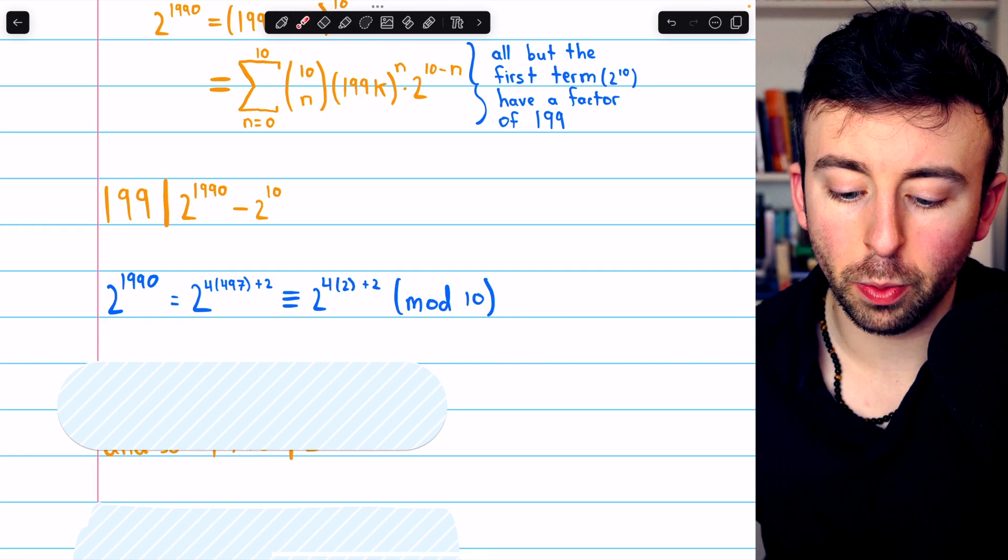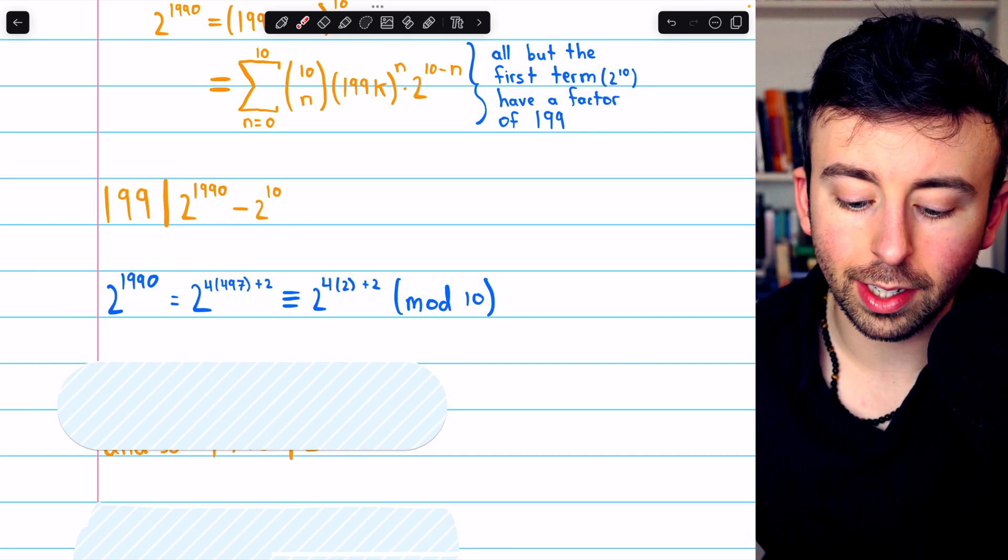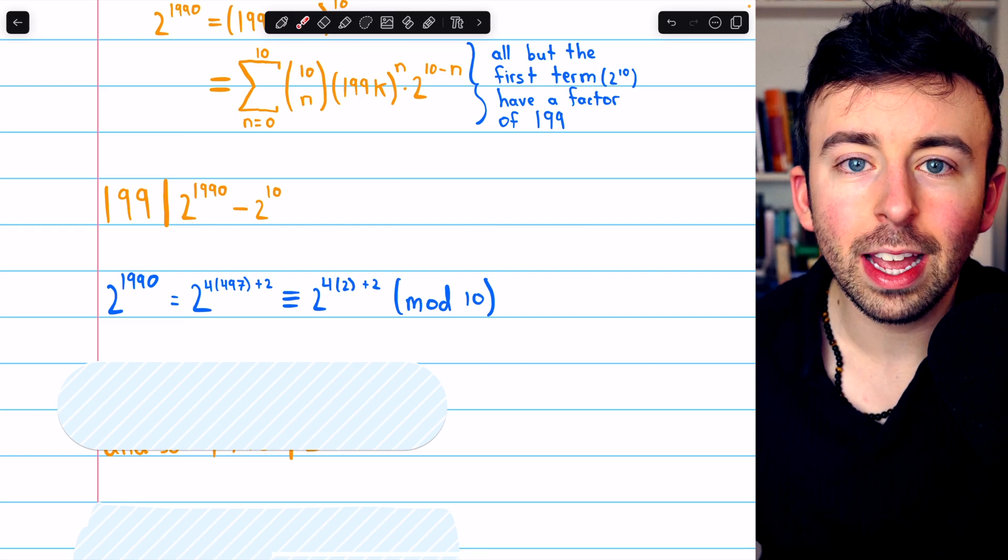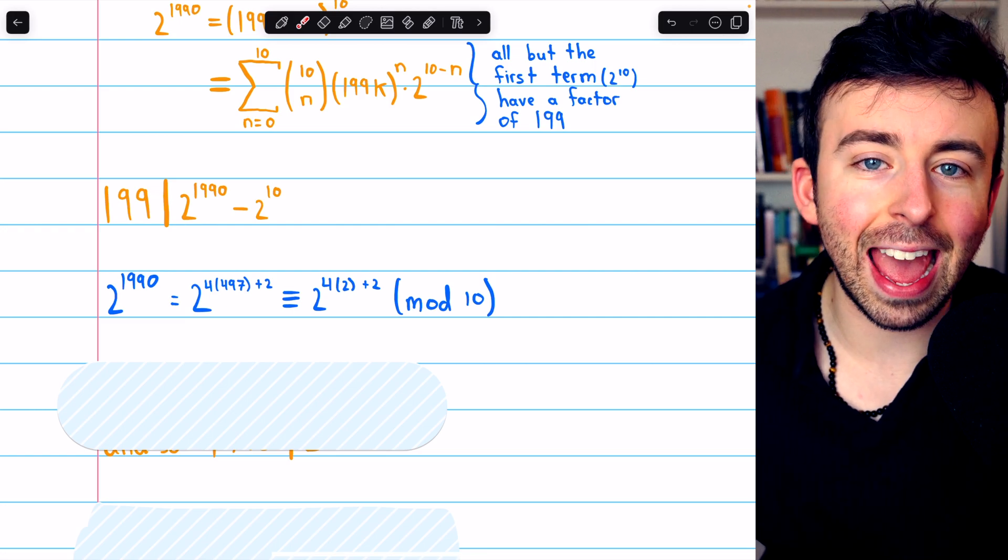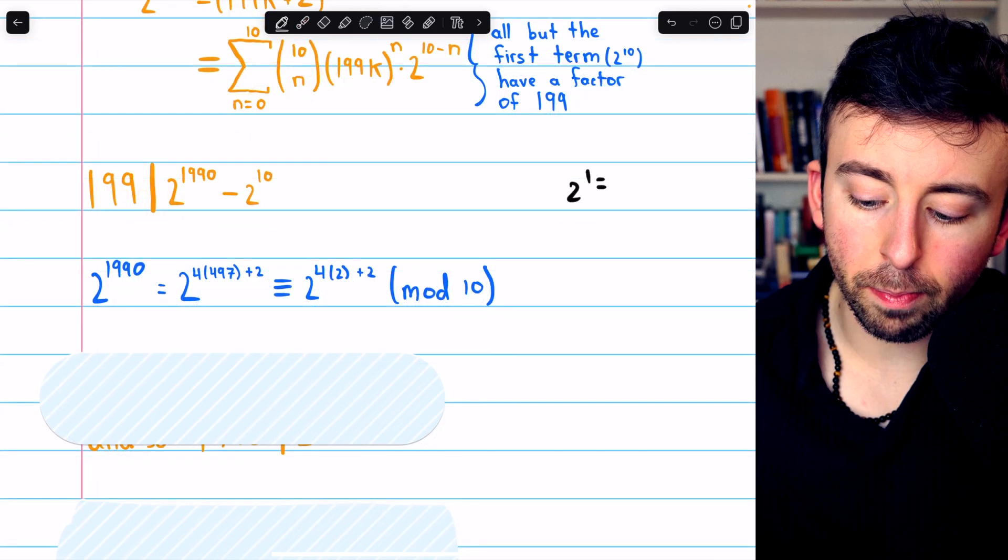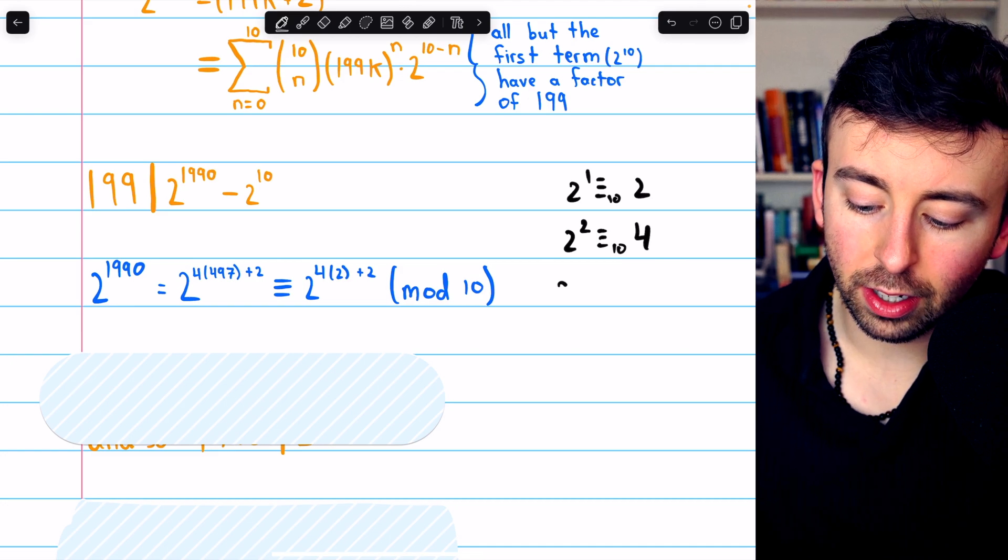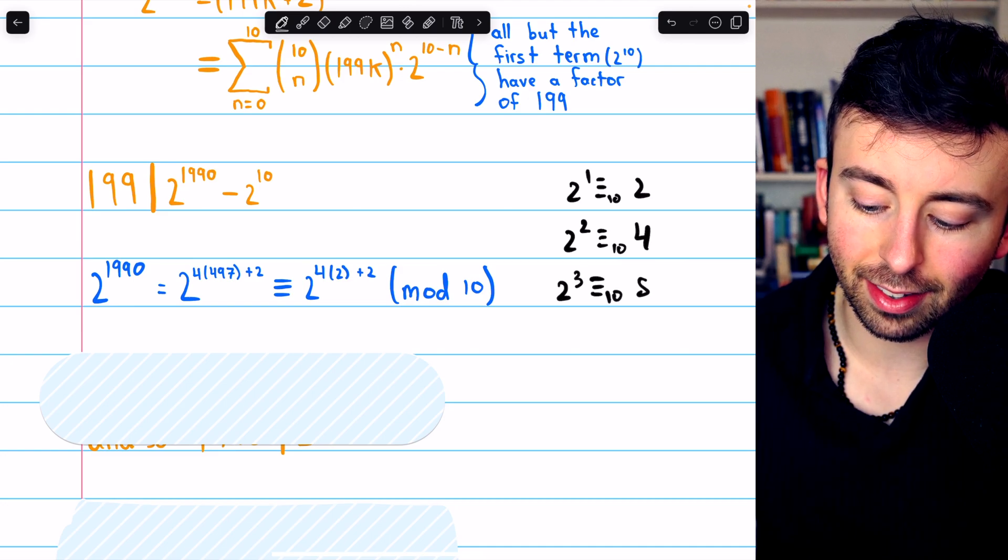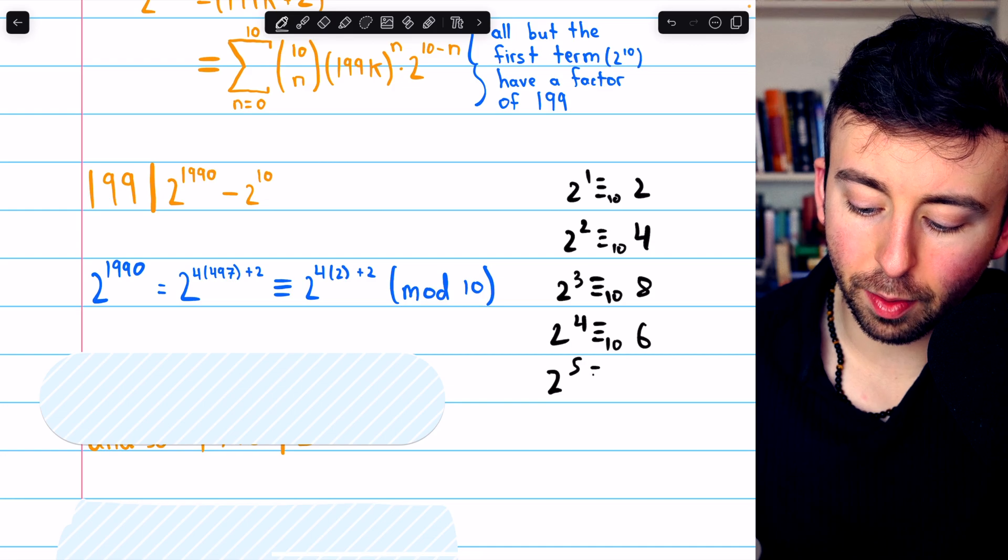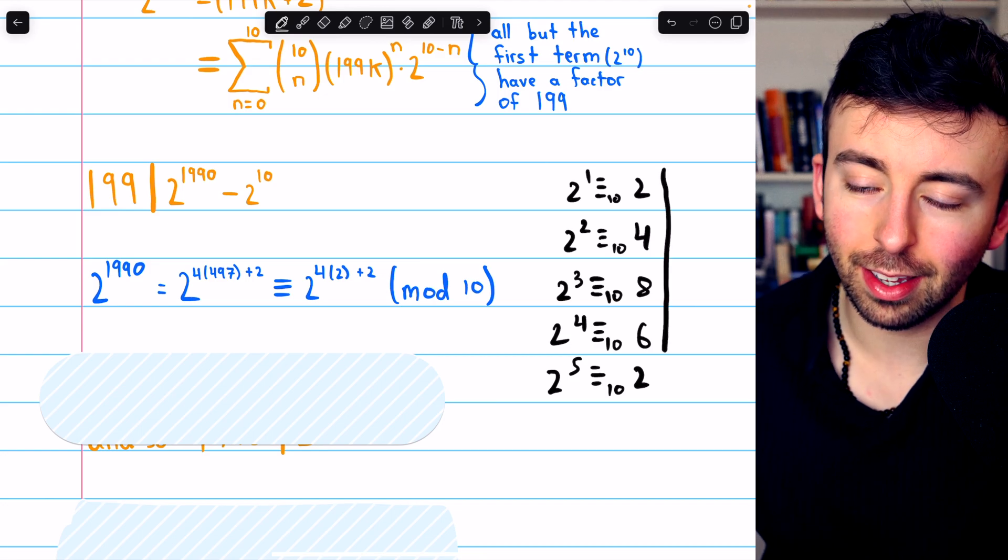And we can show that this difference is indeed divisible by 10, but just using some modular congruence. 2 to the 1990 is equal to 2 to the 4 times 497 plus 2. The reason we break this down into some multiple of 4 is because 2 to the n mod 10 has a cycle of period length 4. 2 to the 1 mod 10 is 2. 2 to the 2 mod 10 is 4. 2 to the 3 mod 10 is 8. 2 to the 4 mod 10 is 6. And then 2 to the 5 mod 10, doubling again, gets us back to 2. So you can see the period is 4.